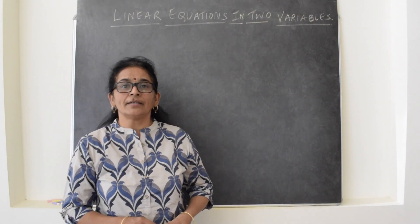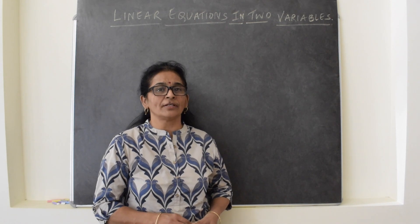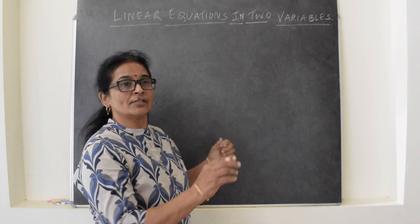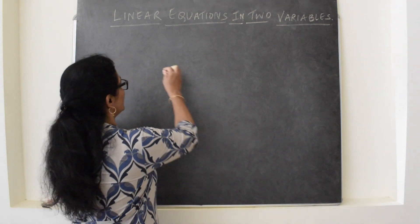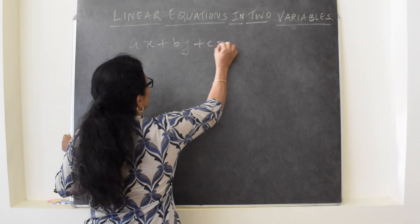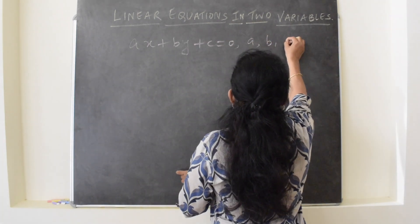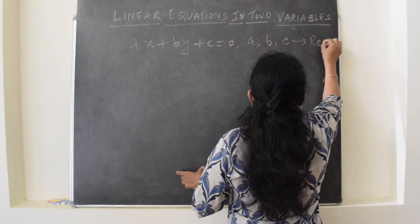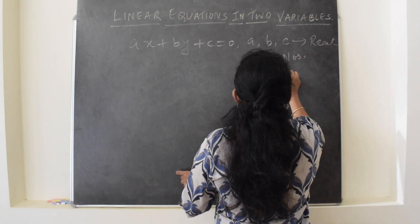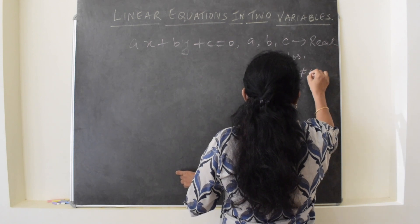Today we are going to study about linear equations in two variables. The standard form of linear equations in two variables is ax plus by plus c is equal to zero. The conditions here are: a, b, c are real numbers and a and b are not equal to zero.